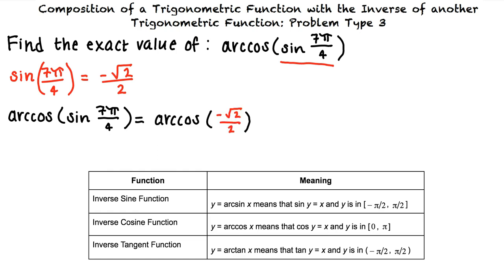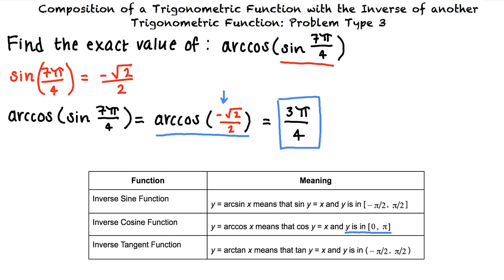Good job! Keep going! Since we are looking for y equals the inverse cosine of negative √2/2, we know that we are looking for an angle y in the closed set of 0 to π, such that the cosine of y equals negative √2/2. The only angle that satisfies these requirements is 3π/4. Excellent work! To summarize: when we find the exact value of a composition of trig functions with the inverse of another trig function, we first simplify the trig value inside the parentheses and then find the value of the inverse trig function.